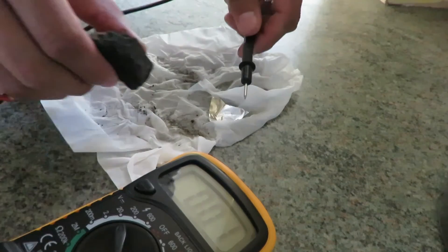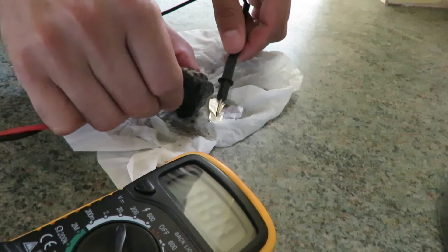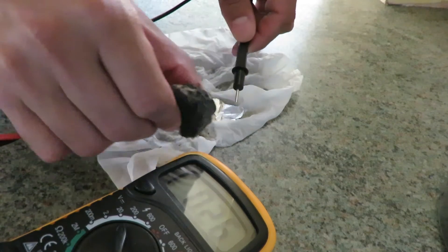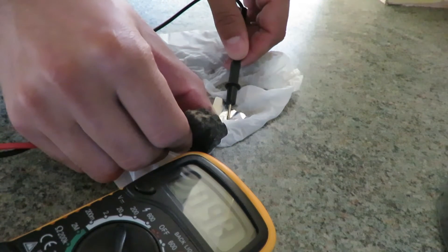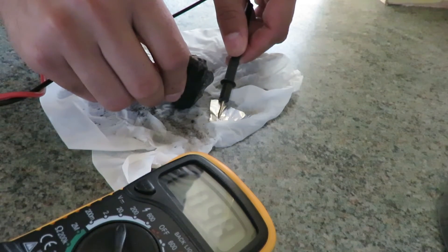Electrolyte is the liquid that will hold the charge and do the chemical reaction. Here is a tissue napkin with some lemon juice, and you can see it's generating some voltage, around half a volt, just with these simple components.